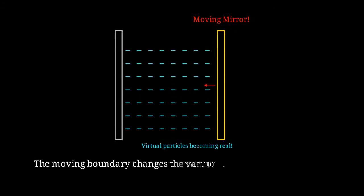Here's the physics. When the mirror moves, it changes the boundary conditions that define the vacuum state. A time-dependent boundary means the vacuum at one instant is different from the vacuum at another instant.